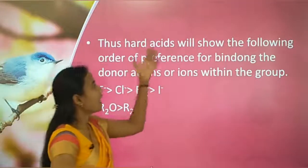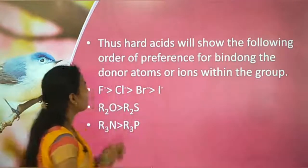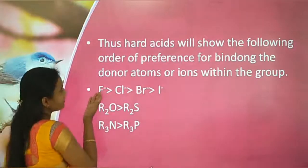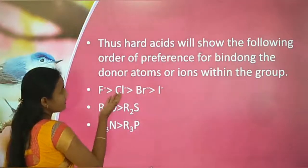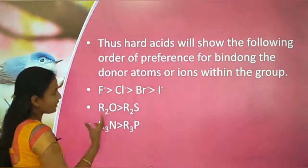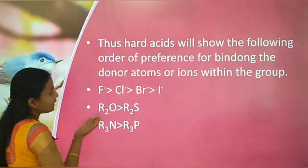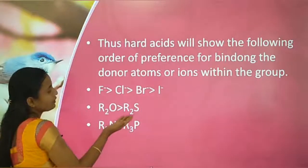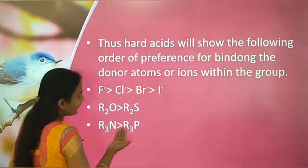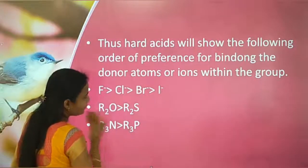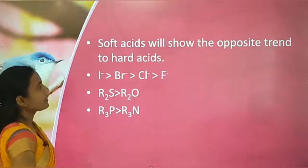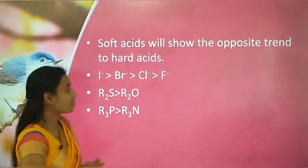Hard acids show the following affinity order for bases: F⁻ > Cl⁻ > Br⁻ > I⁻, and R2O > R2As, and R3N > R3P. For soft acids, this order is reversed: I⁻ > Br⁻ > Cl⁻ > F⁻, and R2As > R2O, and R3P > R3N.